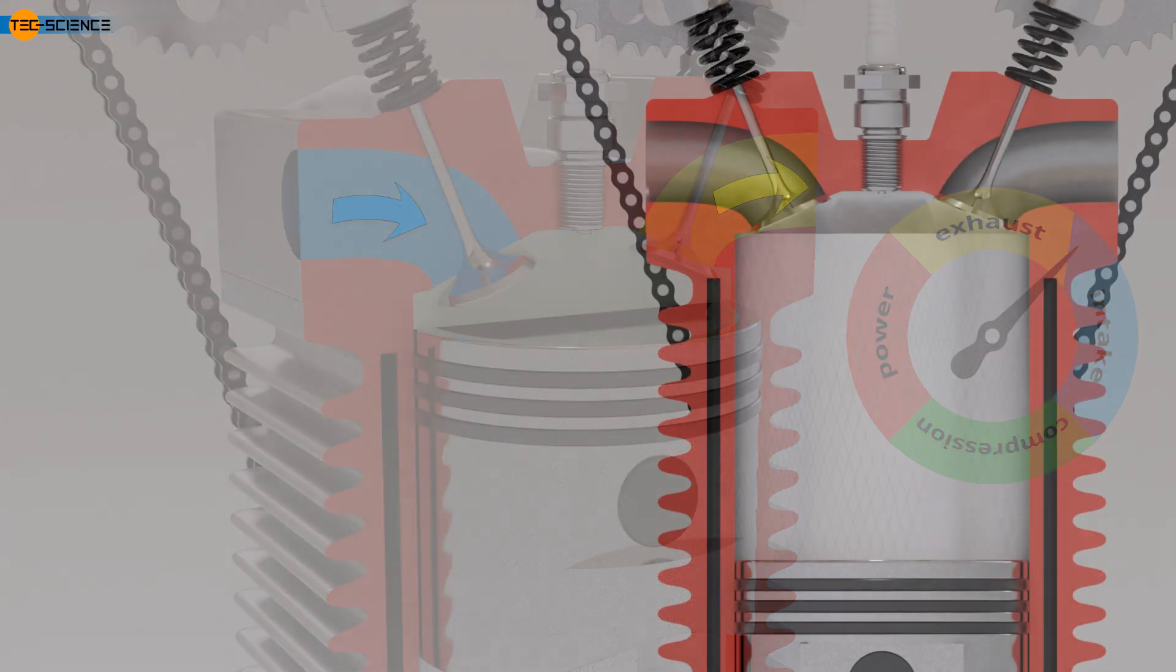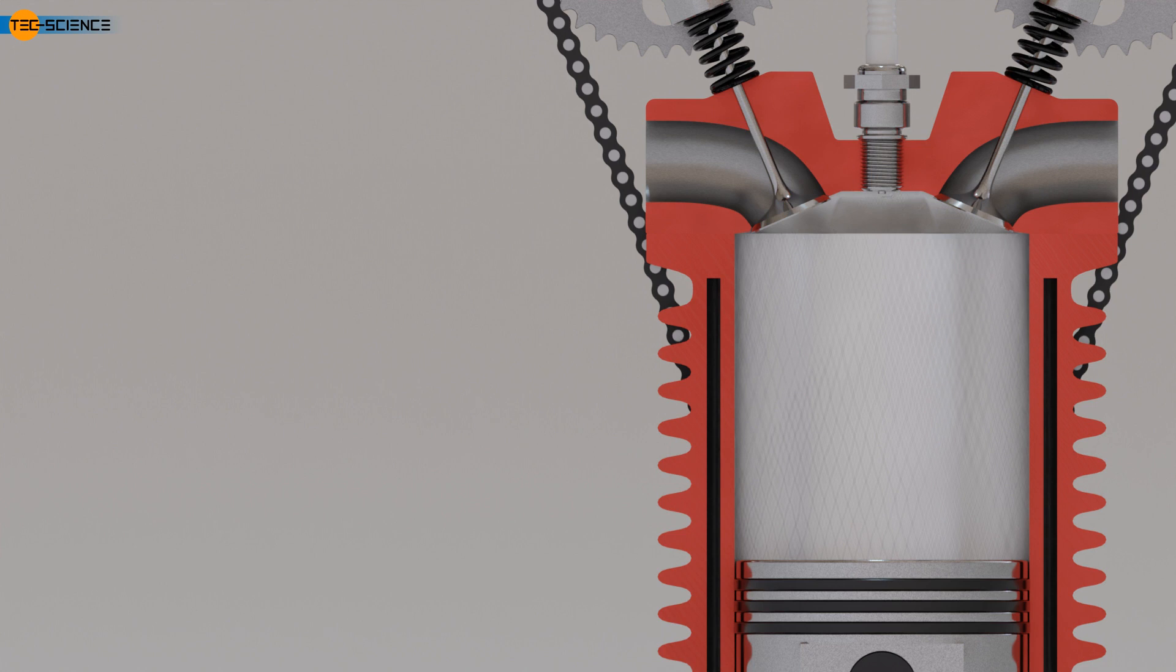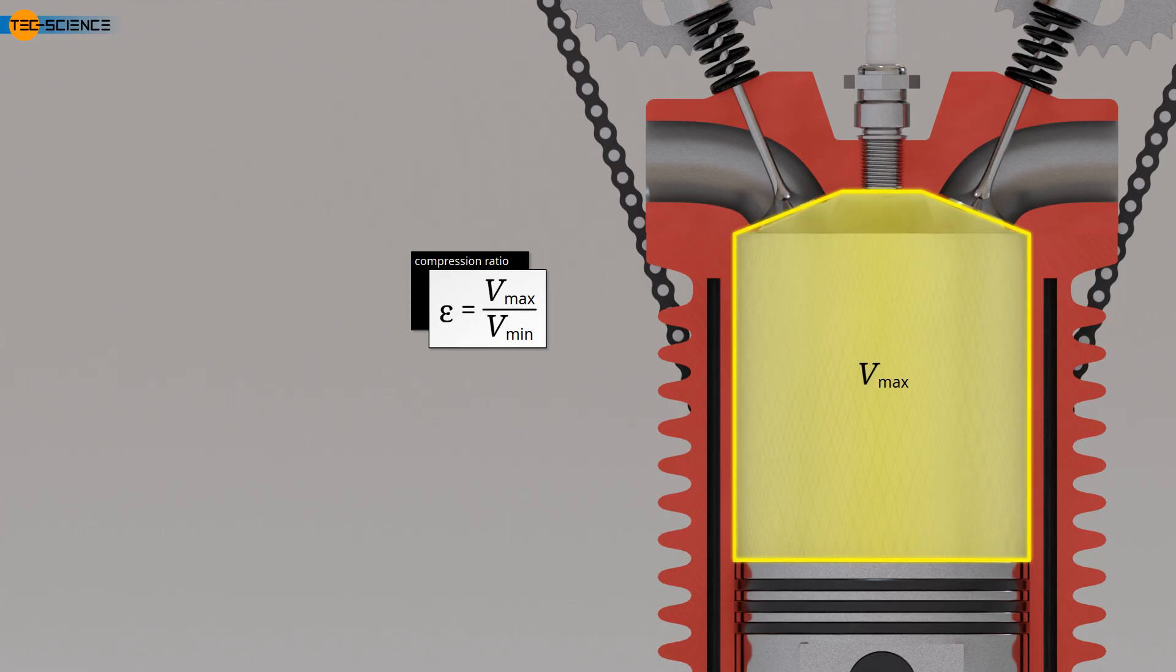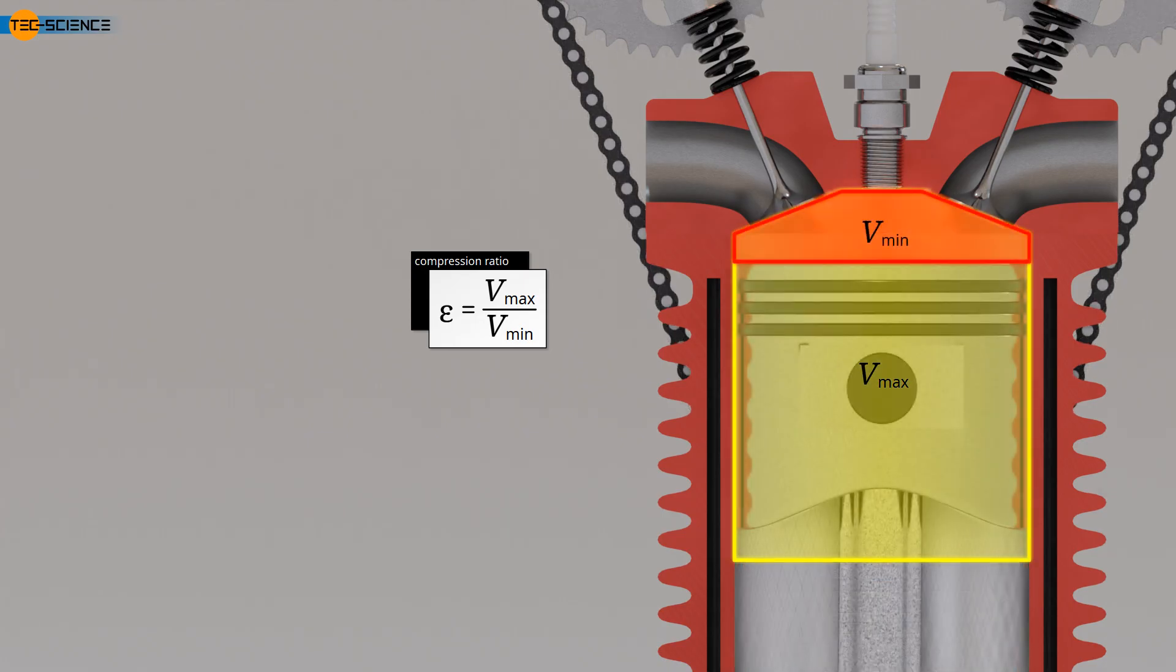An important characteristic of an engine cylinder is the so-called compression ratio epsilon. This ratio represents the relationship between the maximum cylinder volume before compression at the bottom dead center and the minimum cylinder volume after compression at the top dead center. The higher the compression ratio, meaning the more the mixture can be compressed, the higher the thermal efficiency, and the more effective the conversion of heat energy into mechanical energy. The compression ratios of gasoline engines in the automotive sector are typically around 10 to 1. Therefore, the cylinder volume is compressed to one-tenth of its original volume during compression.